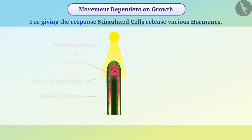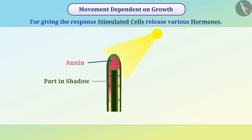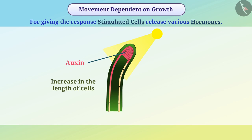Auxin causes an increase in the length of cells. However, when light comes from one direction, auxin diffuses from the tip of the plant towards the part of the plant away from the light. Due to this, the concentration of auxin increases in that part, resulting in a greater increase in the length of cells in that part, which causes the plant to turn towards the light.